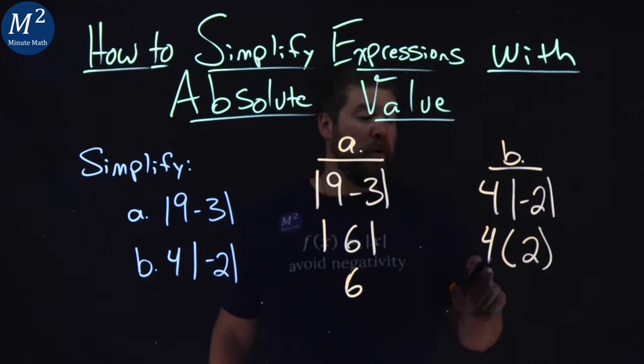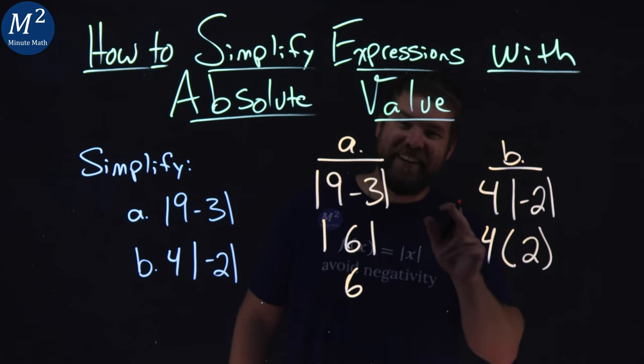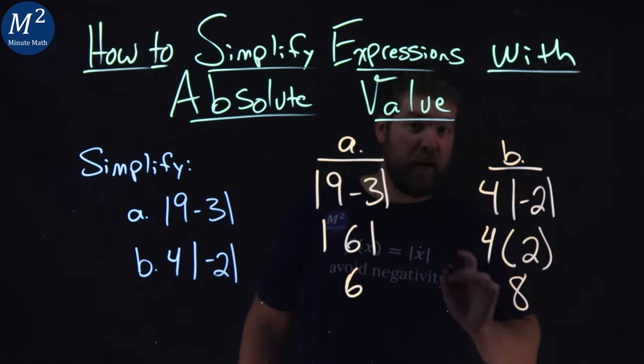From there, we're just multiplying. 4 times 2 is 8. And there we have it.